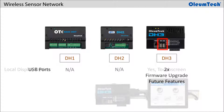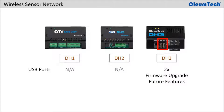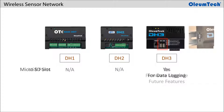The DH3 is equipped with two USB ports for supporting added features in the future. It currently supports firmware upgrades using a USB flash drive. The DH3 is also equipped with a microSD card slot for accepting industrial grade cards for supporting data logging functions.